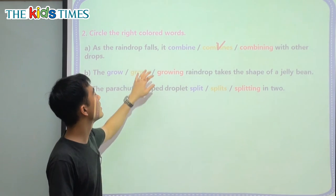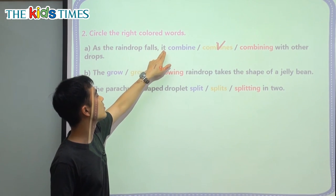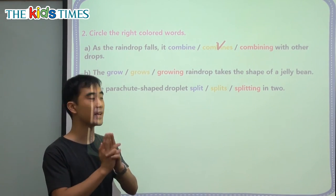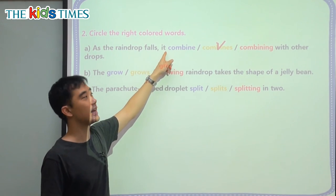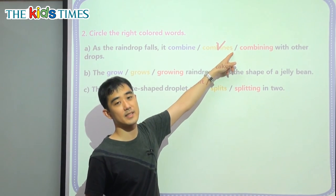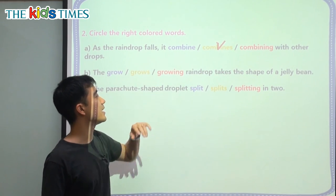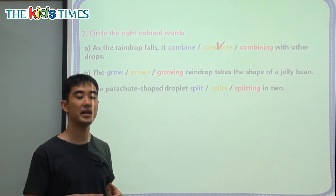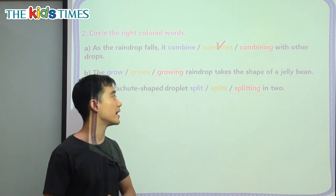So again, when the subject — what we're talking about — is one thing, in this case 'it,' then we have to put the S at the end of the verb. So we can say: it talks, or it walks, or it sleeps.